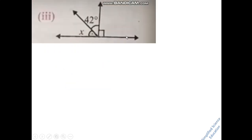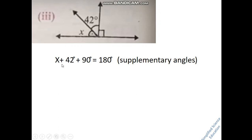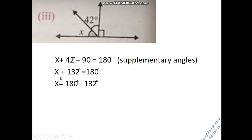For part 3, you have a straight line. One angle is 42 degrees, and there is a small square symbol showing 90 degrees. So the equation is: x plus 42 degrees plus 90 degrees equals 180 degrees. Adding 42 and 90 gives 132 degrees. Subtracting from 180 gives the answer 48 degrees.